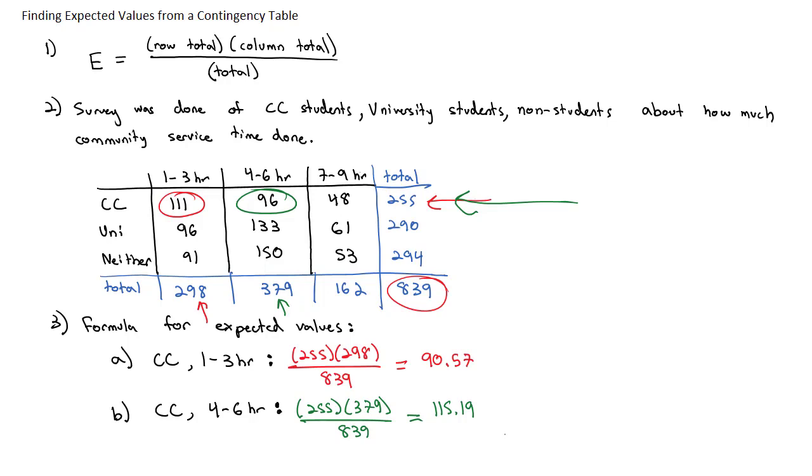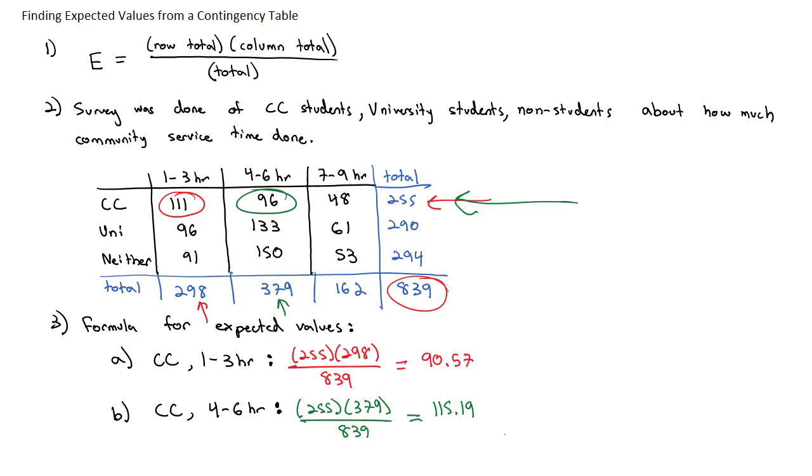The challenge is this takes a lot of time. And so we're going to show you a nice little trick on Excel to make this easier. On Excel, what we can do is we can type in equals, and we will click the row total times click the column total and divide by click the total total.